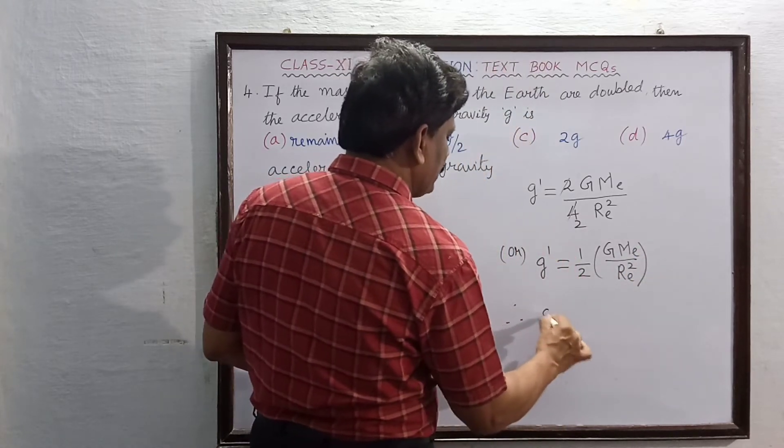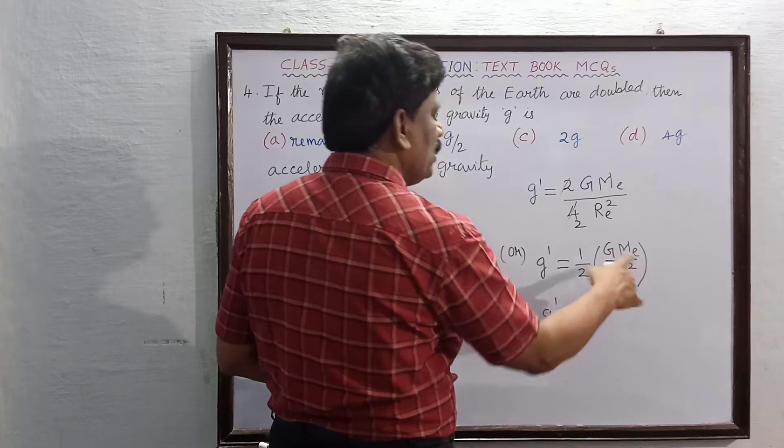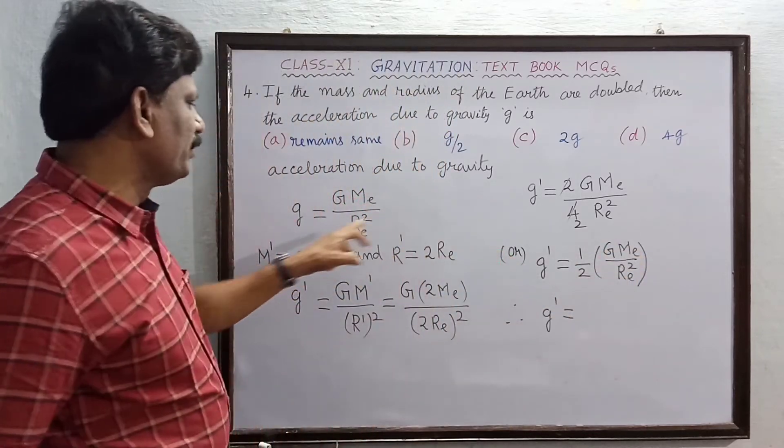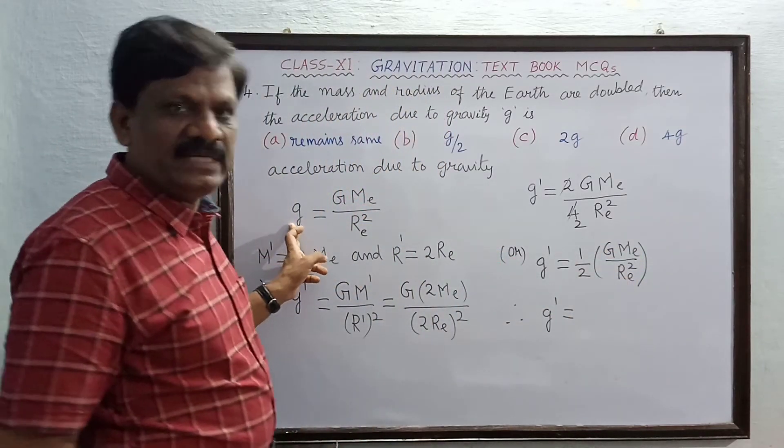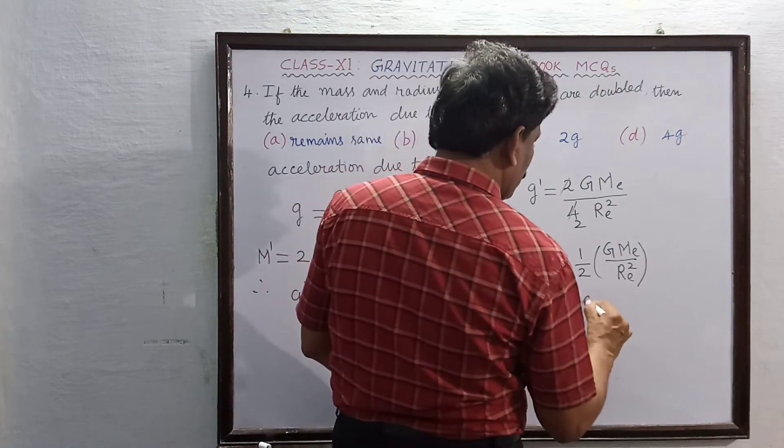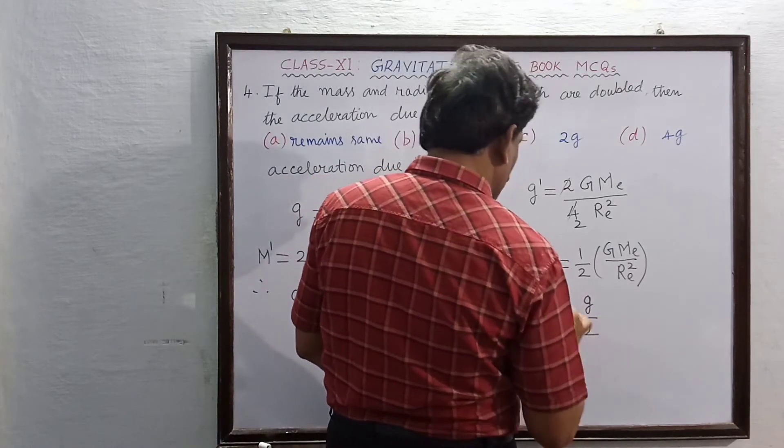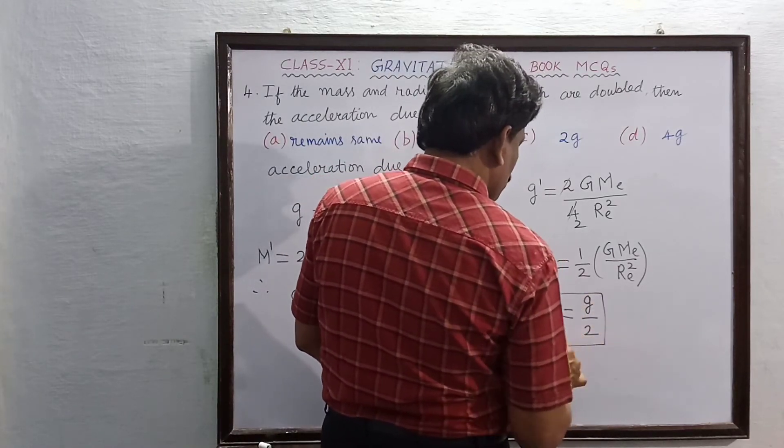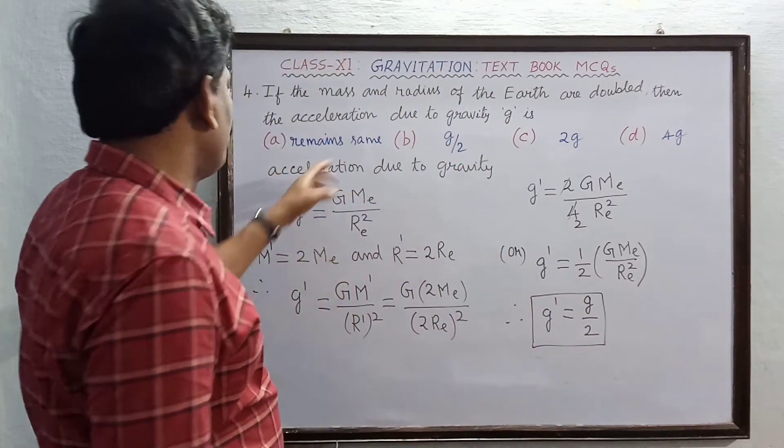Therefore, what is g dash? It is equal to GME by R square, if we can substitute it by g. This is equal to g divided by 2. G by 2 is the answer.